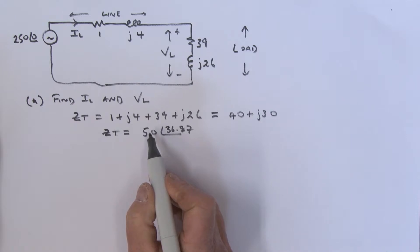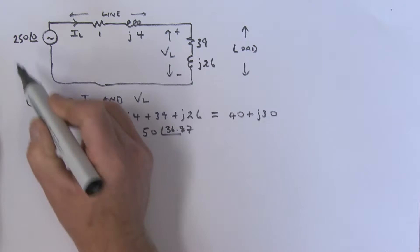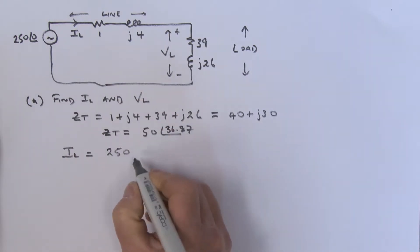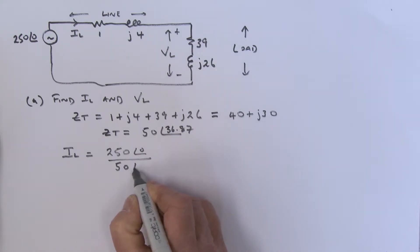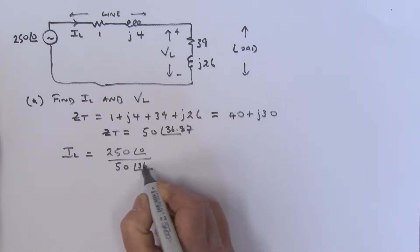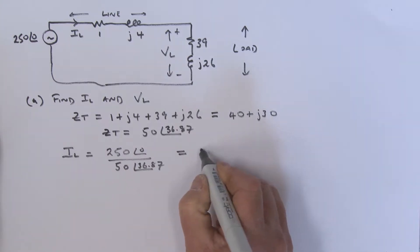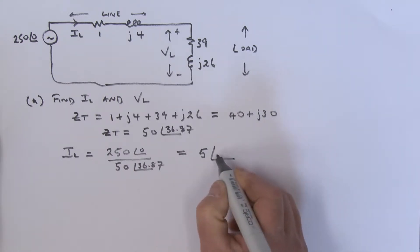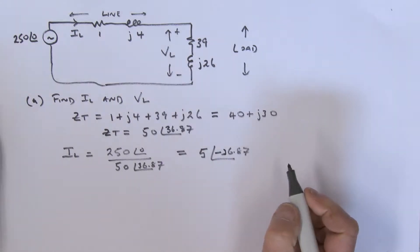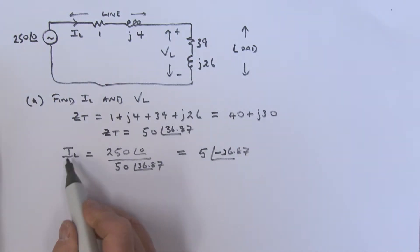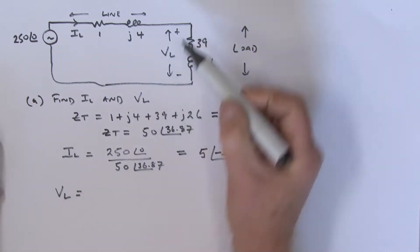Now we need to convert that into its polar representation. ZT is equal to 50 at an angle of 36.87 degrees. The current IL is then equal to the voltage 250 at angle zero divided by ZT, which is 50 at angle 36.87, giving us a current of 5 at an angle of minus 36.87 degrees.